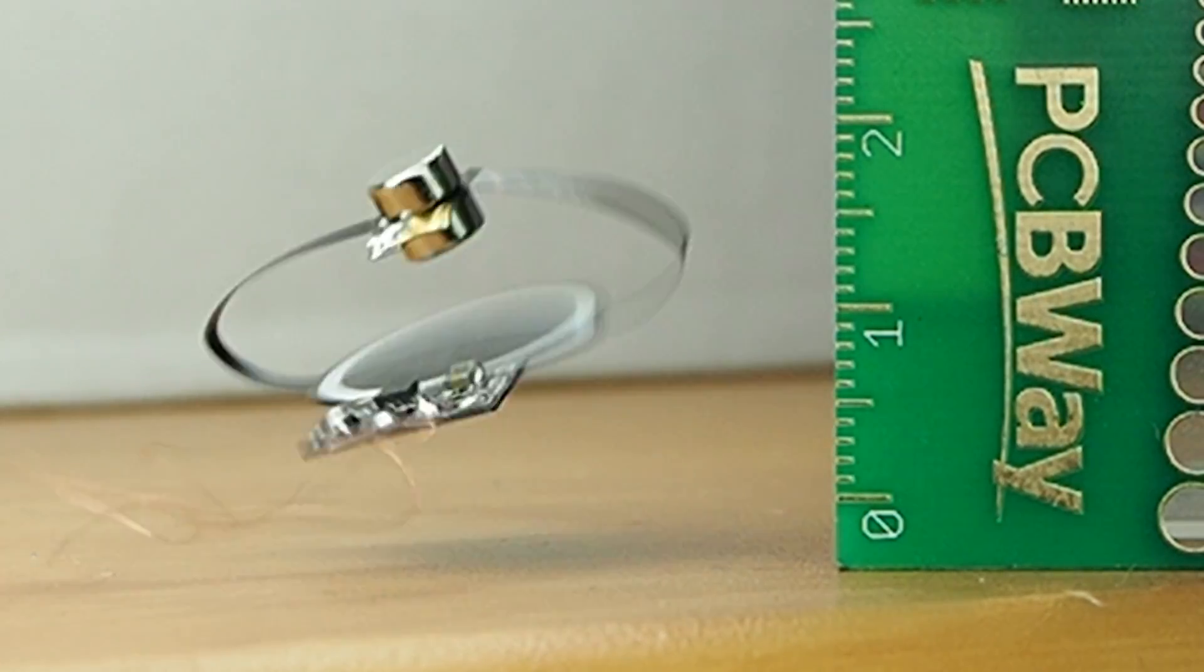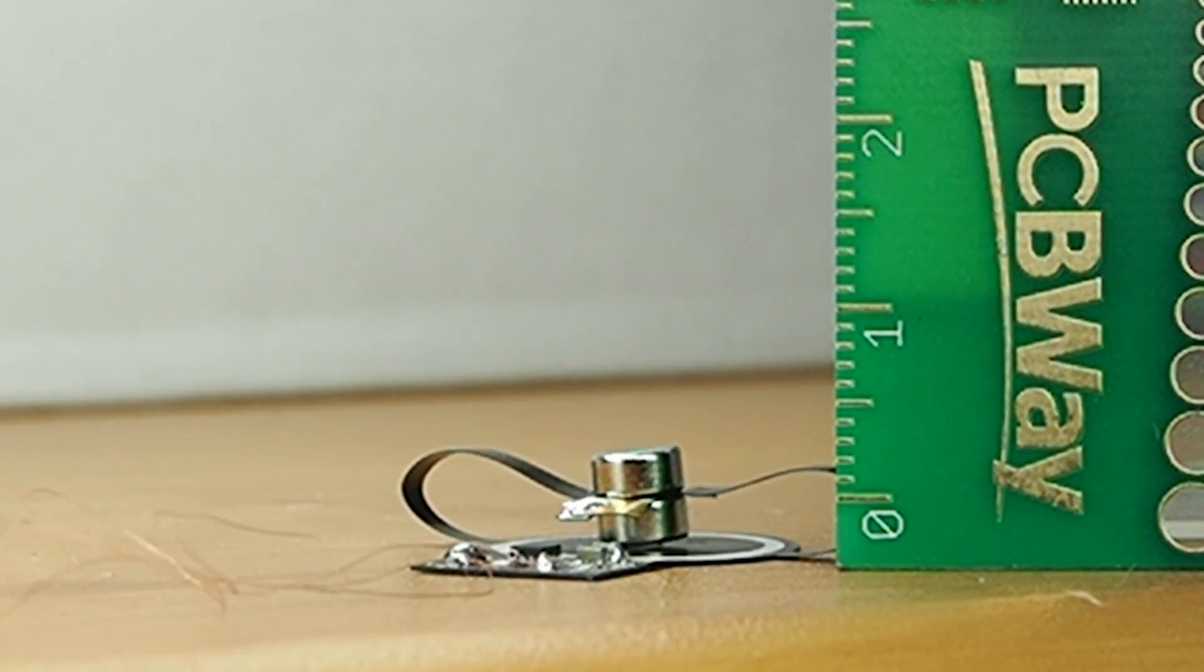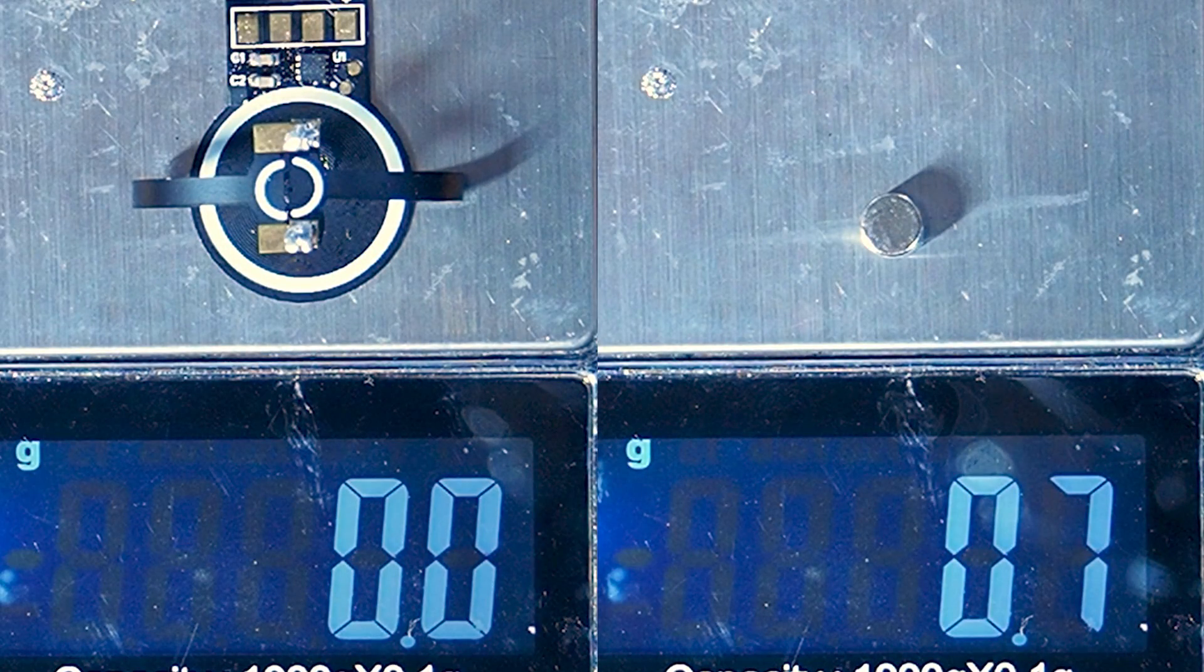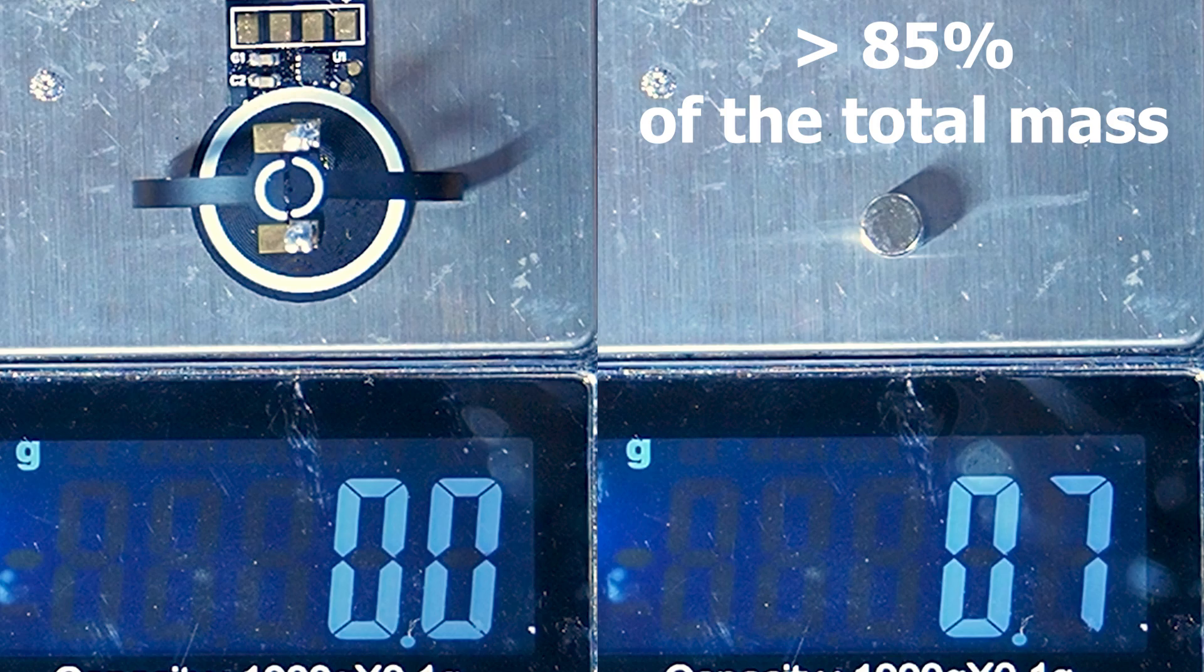I was not expecting it to jump this high, but scientifically it makes sense when you consider that the magnets take more than 85% of the total mass. And there you have it, the world's first jumping PCB. Just remember to subscribe if you want to see more weird PCB stuff like this one. See you soon.